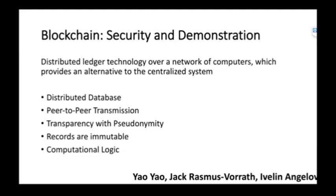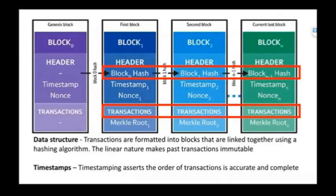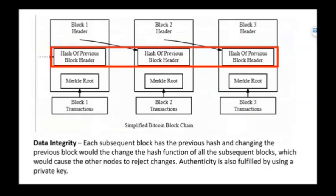The data structure of blockchain has a hash, and the transactions are formatted into blocks that are linked together using a hashing algorithm. The linear nature makes past transactions immutable, and the timestamp asserts that the order of transactions is accurate and complete. Data integrity works because each subsequent block has the previous hash, and changes to the previous hash will change the hash function of all subsequent blocks, which would cause other nodes to reject the changes.